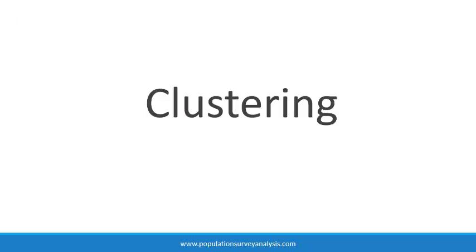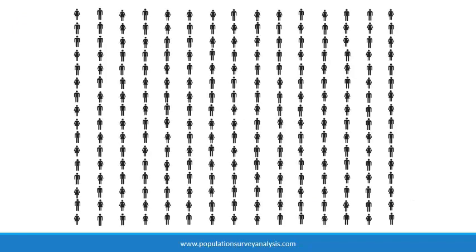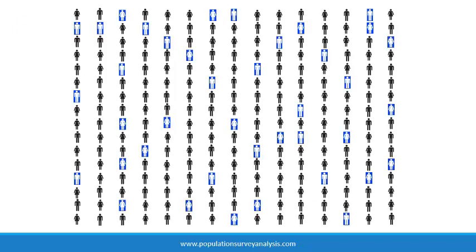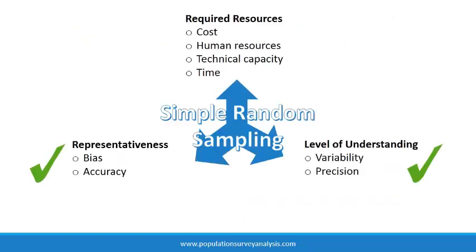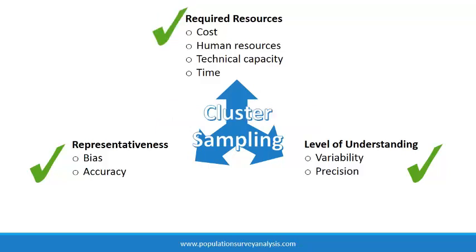A truly random selection of households would involve listing all of the households in the country and randomly selecting the desired number of households from that list. Using this approach, each household would have an independent and equal chance of being included in the survey. While this approach is statistically ideal, the cost of enumerating all households and then visiting the selected households scattered all over the country makes this approach impractical. A more practical approach is cluster sampling.